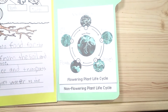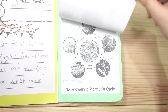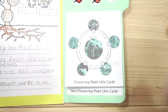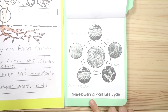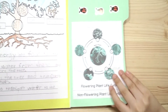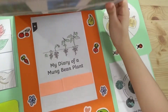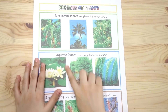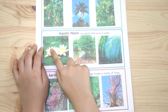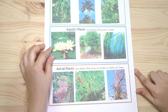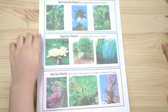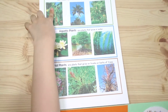That's what I call that — flowering plant life cycle, bean plant. Non-flowering plant life cycle. Habitat of plants: terrestrial plants, aquatic plants, aerial plants. I cut and paste the pictures where they belong — banana flower.